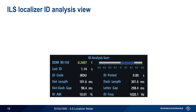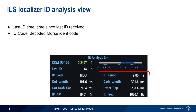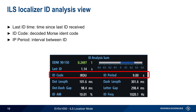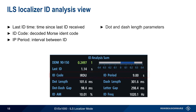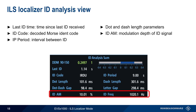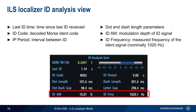Information about ident signal parameters can be seen in the ID analysis view. The time since the last received ID is shown, as well as the decoded Morse ID and the period or interval between ID signals. The length and spacing of the dots and dashes in the Morse ID can be seen, along with the modulation depth and frequency of the ID signal, which should normally be about 1020 Hz.